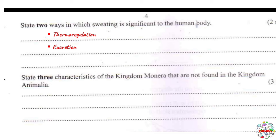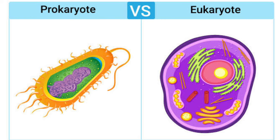Moving on to question 7: state three characteristics of kingdom Monera that are not found in kingdom Animalia. Number one: members of kingdom Monera are prokaryotic while those from kingdom Animalia are eukaryotic. Members of kingdom Monera — bacteria — have their nuclear material scattered within the cytoplasm, not surrounded by a nuclear membrane. This is what is termed prokaryotic.